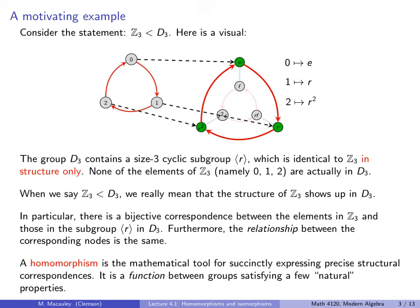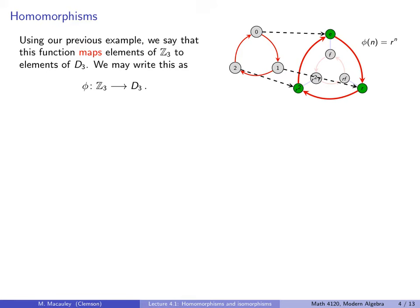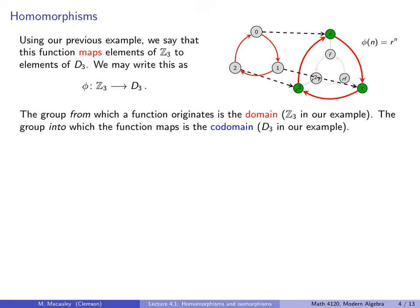This function here is a homomorphism from Z3 to D3 — that's the topic of this lecture. We say that this function maps elements of Z3 to elements of D3. We may write this as: phi is a function that sends Z3 to D3. We can write a succinct formula: phi of n equals R to the n, because the function sends 0, 1, or 2 to R to the 0, R to the 1, and R to the 2. The group from which a function originates is the domain — in our example, that's Z3.